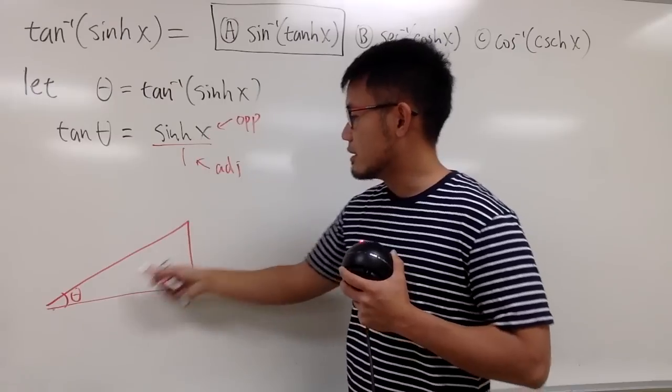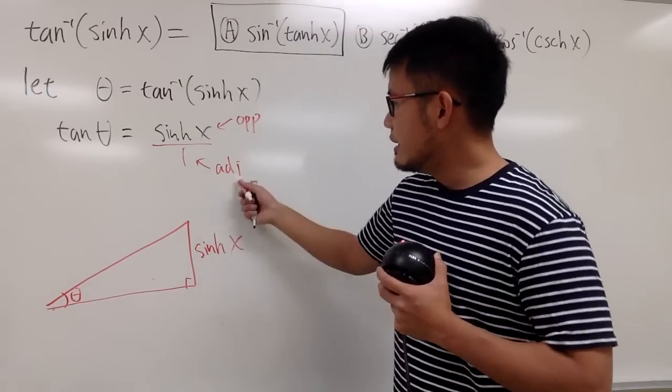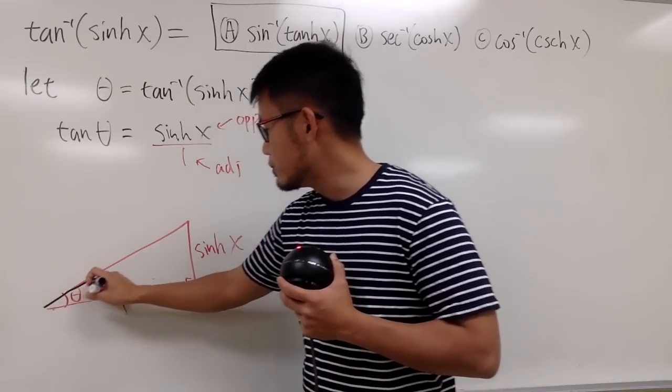Opposite is sinh x. So this is the opposite, which is sinh x. And the adjacent is just 1, which is right here. However, from this, we need to figure out the hypotenuse, which is this.